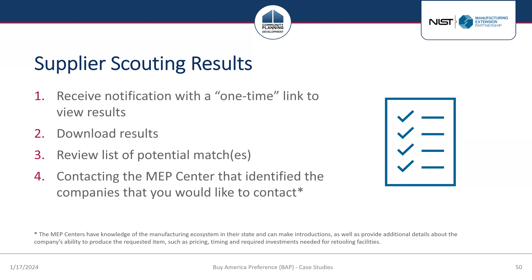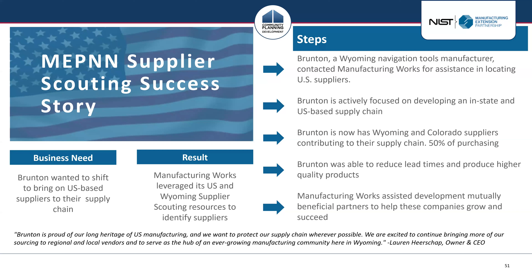For partial matches where a company has capacity to manufacture a similar product, the searcher communicates with the manufacturer through the MEP center, which can help convert a partial match into a full match. Angelina presents a supplier scouting success story: Bruton Company, Incorporated, established in 1894 by mining engineer David W. Bruton, who patented the first Pocket Transit — a portable surveying tool. The company has been headquartered in Riverton, Wyoming since 1972, manufacturing pocket transits, compasses, and sighting instruments. By 2024, as Bruton celebrates its 130th anniversary, all transit and compass models will be produced in-house.